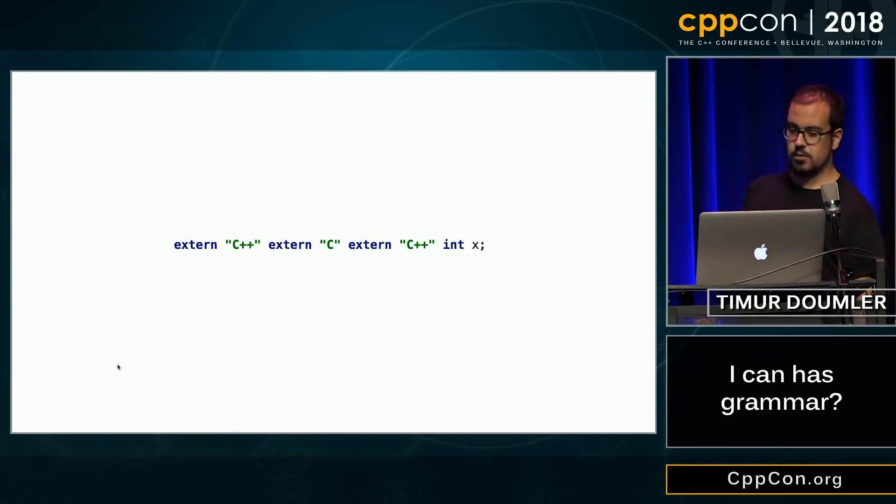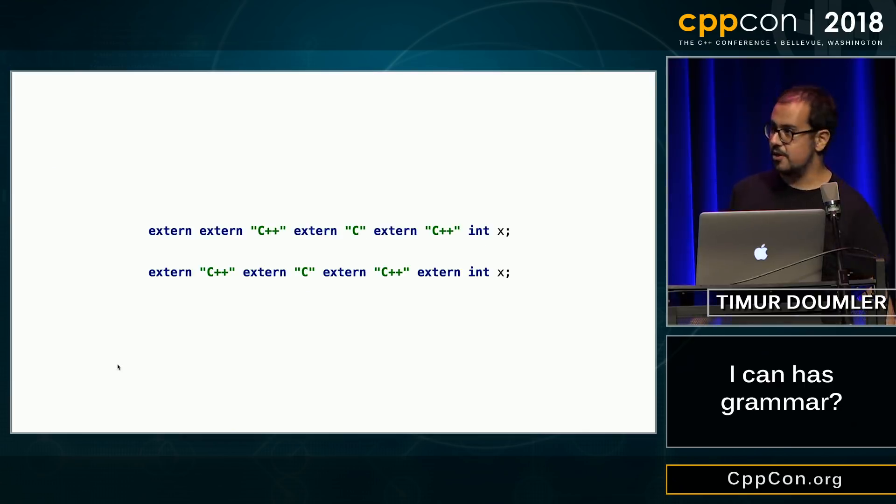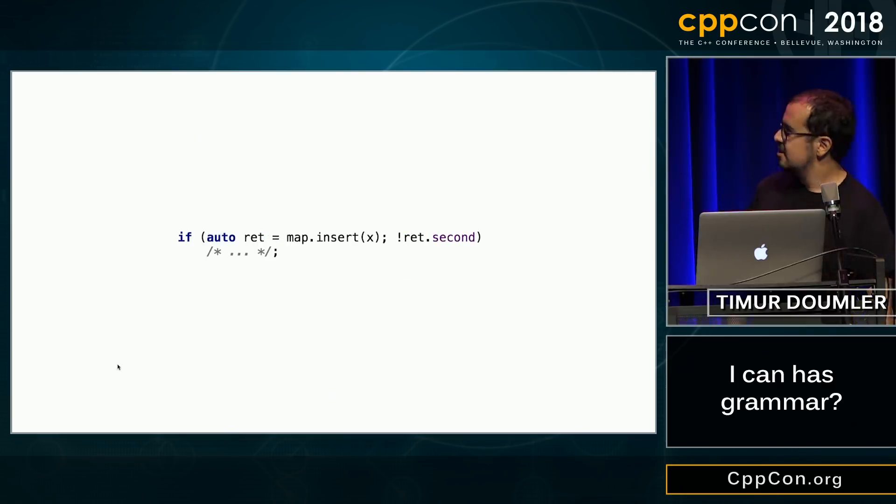And actually, extern has a second meaning. Extern can also be a storage specifier, right? Which is also part of the declaration. So where do you put it? In the beginning or in the end? Well, which one is correct? Godbolt's not gonna help you, because Microsoft rejects the first, GCC rejects the second, and Clang thinks both are okay.